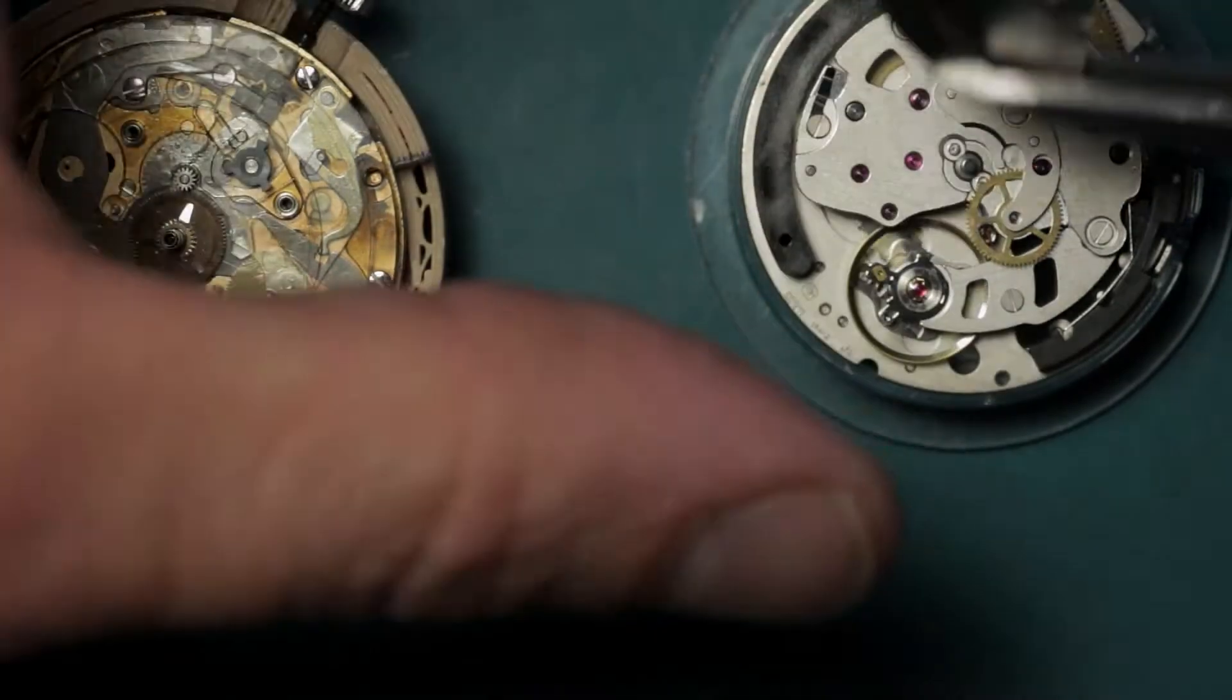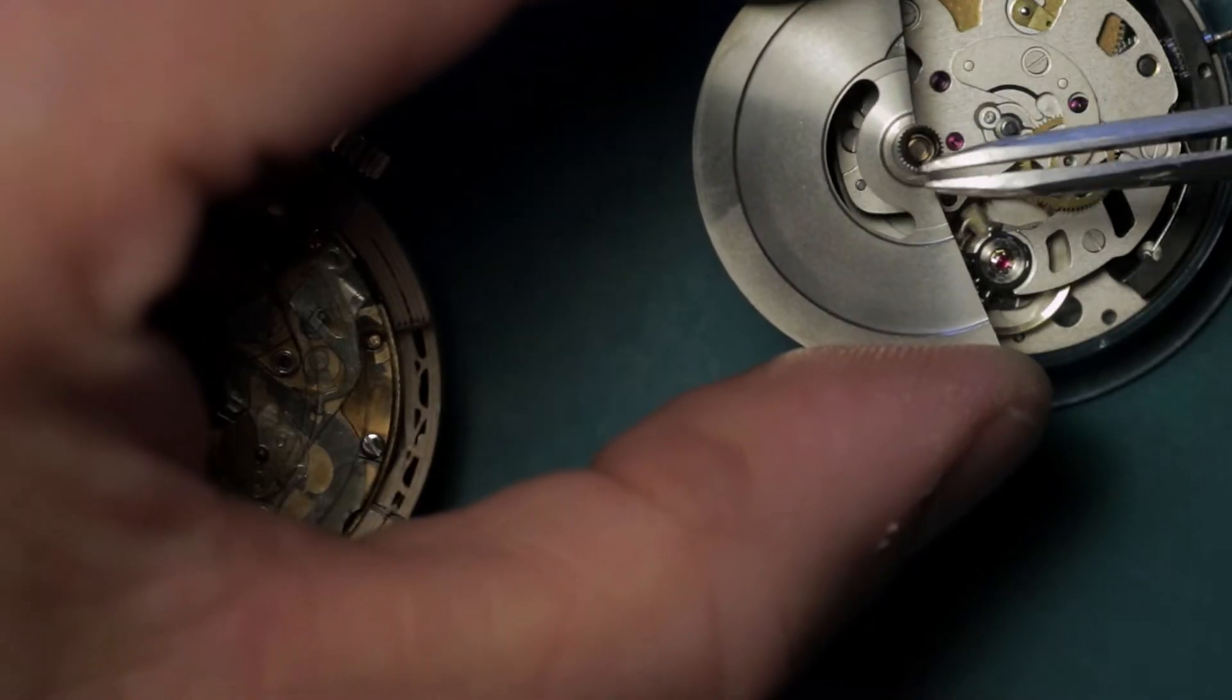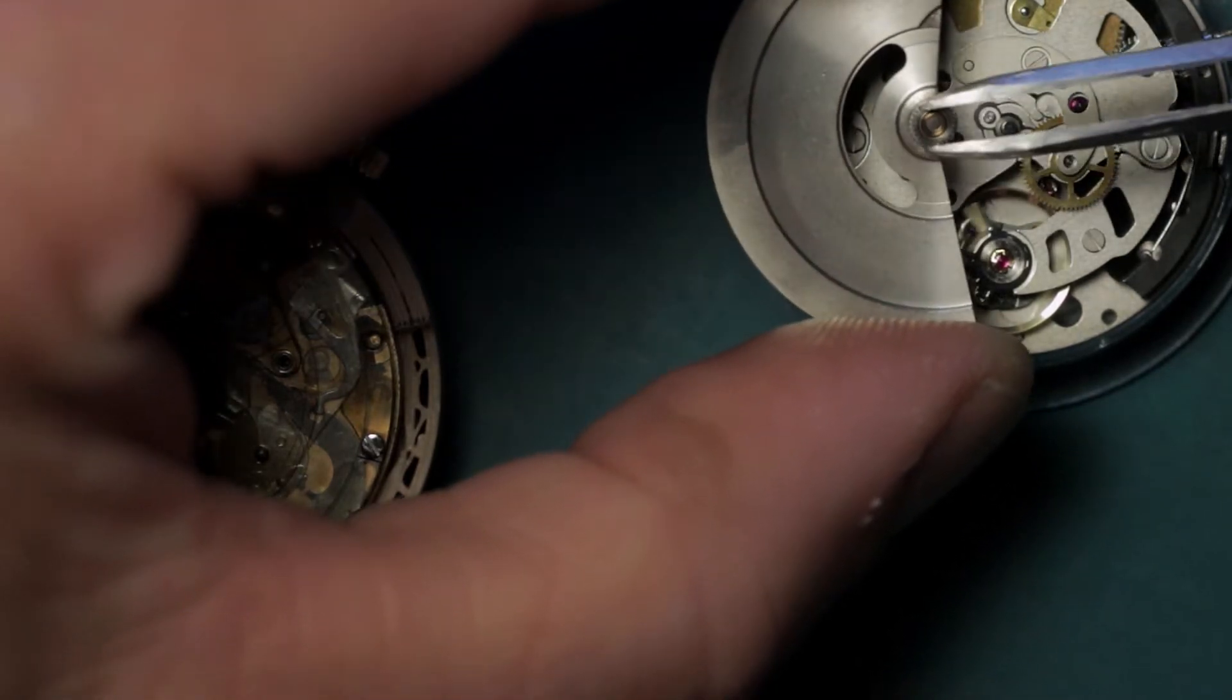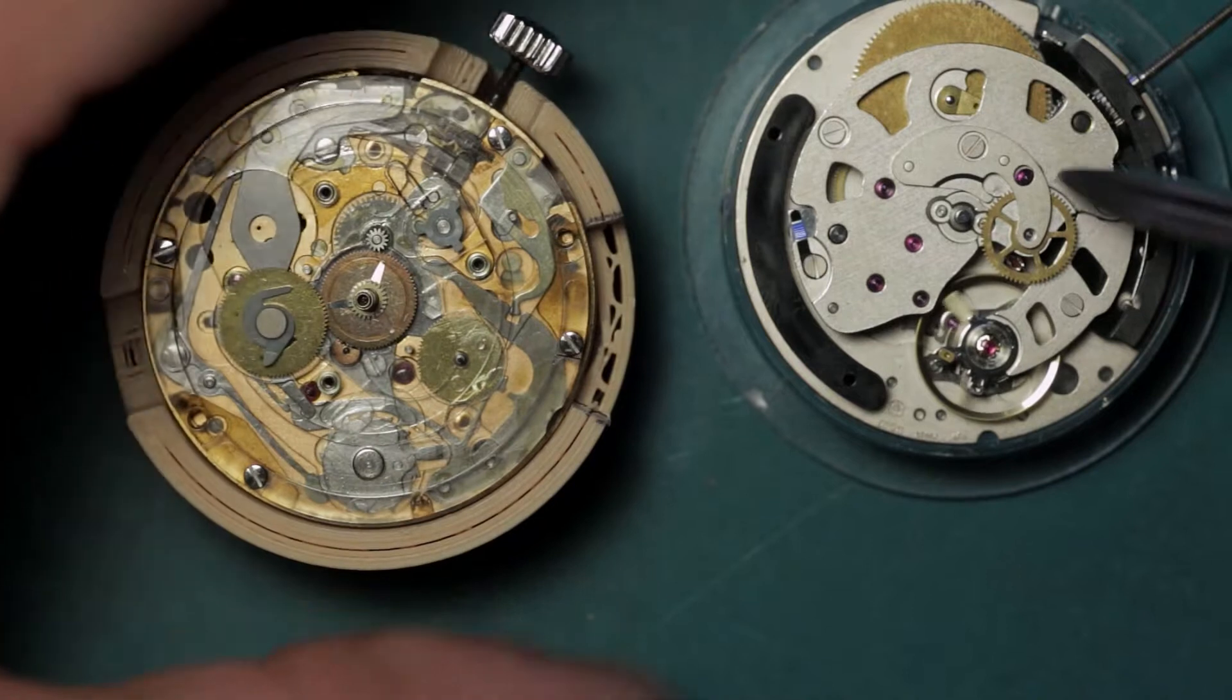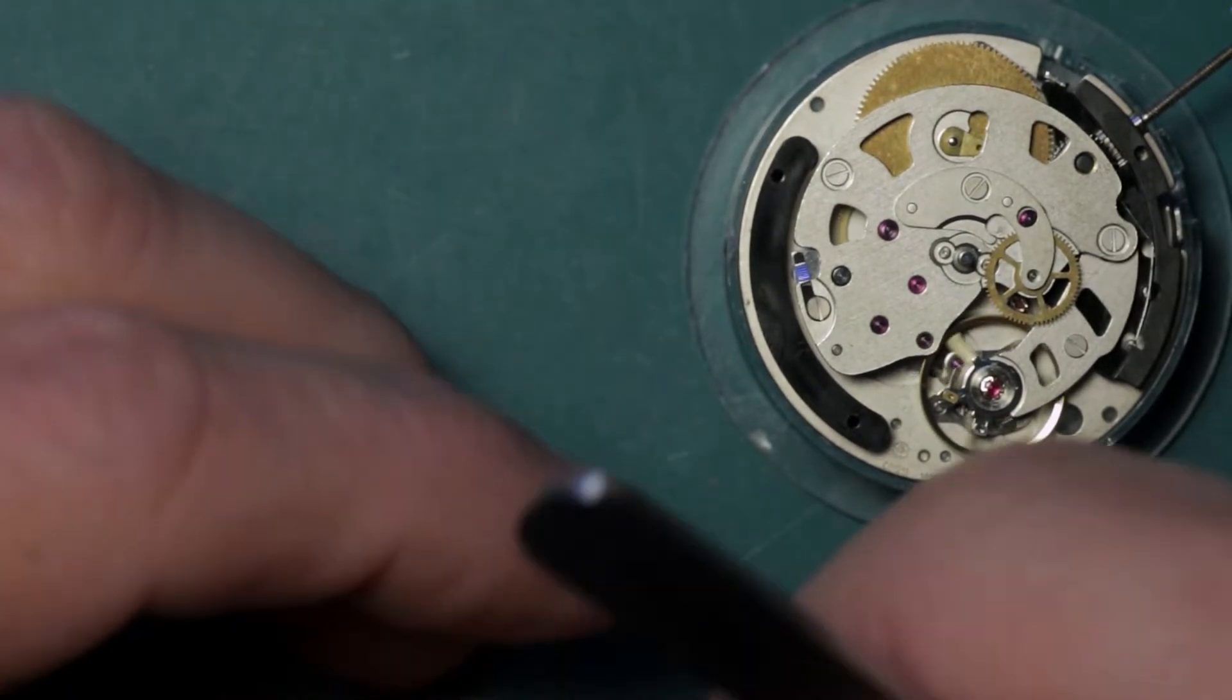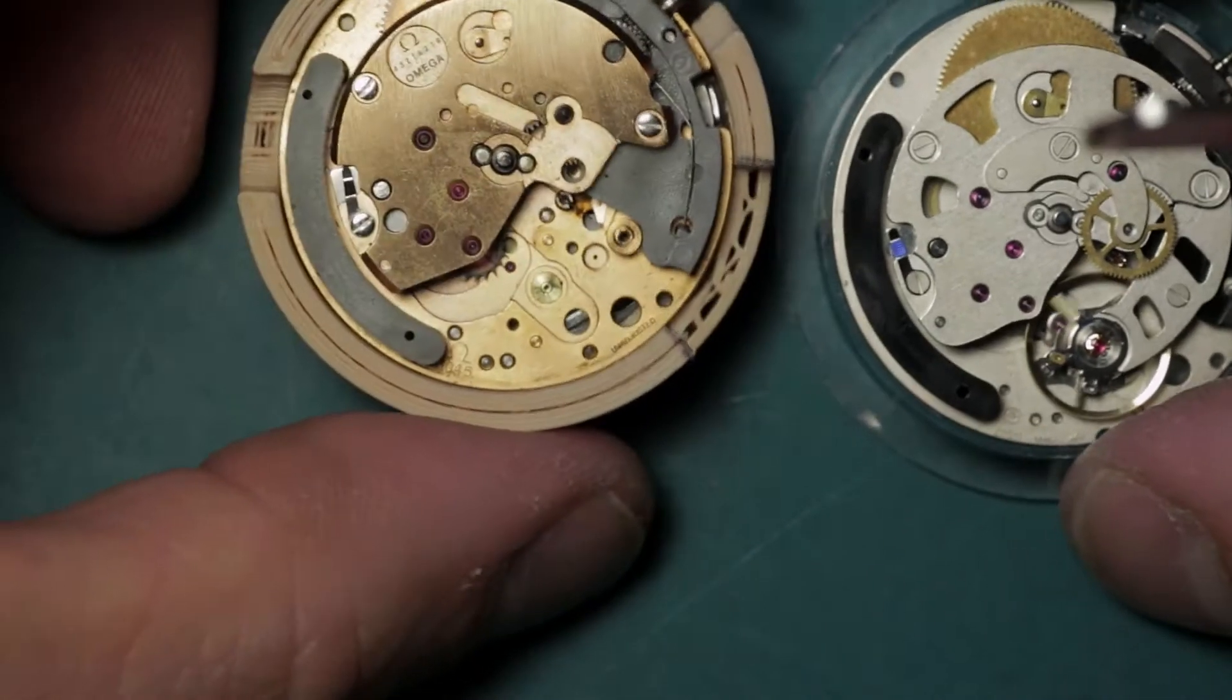So this lifts off like so. This is your drive gear and it's designed so that it will slip, because obviously it comes away freely. Put that to one side. This is the wheel and the bridge that I was telling you about that was caked in oil on this one.